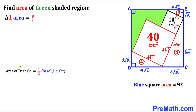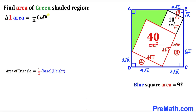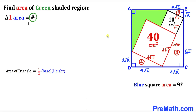Now let's calculate the area of the smallest triangle 1. Using the area of a triangle formula: Area = ½ × base × height. Here the base is 2√2 and the height is √2. So the area of triangle 1 = ½ × 2√2 × √2 = ½ × 4 = 2 cm².